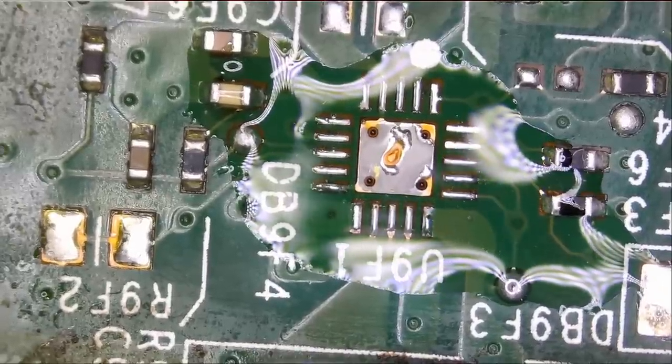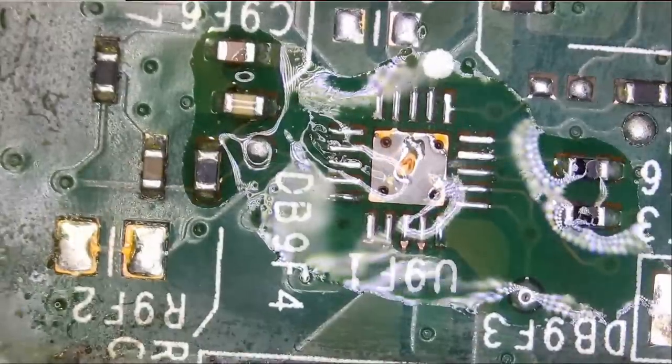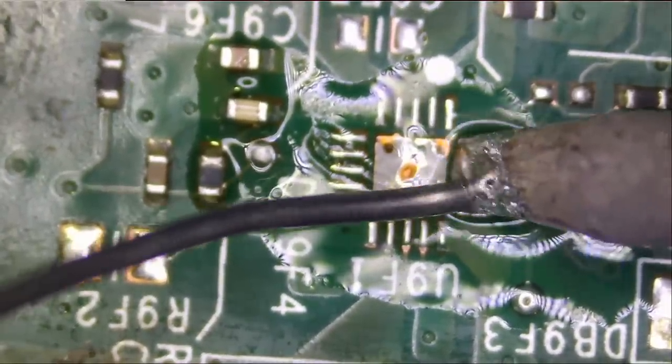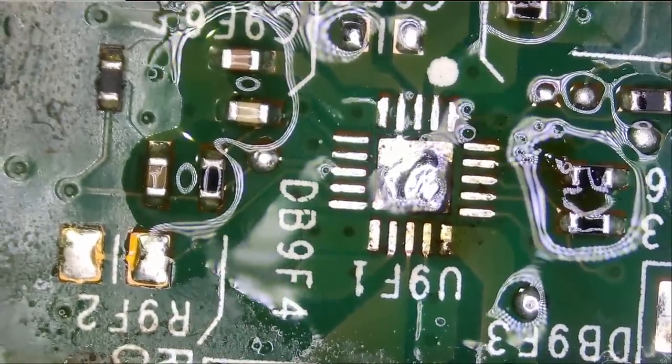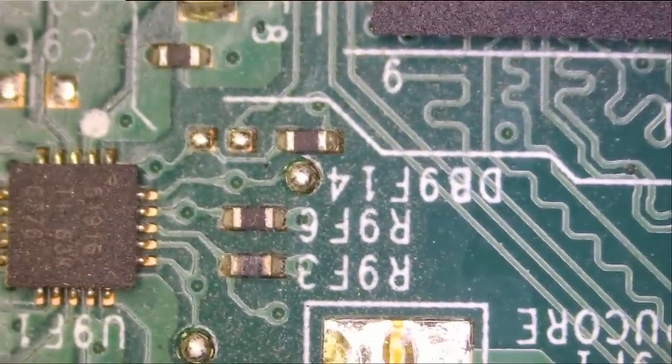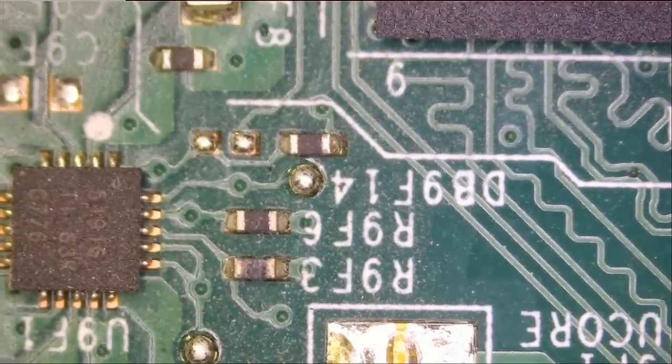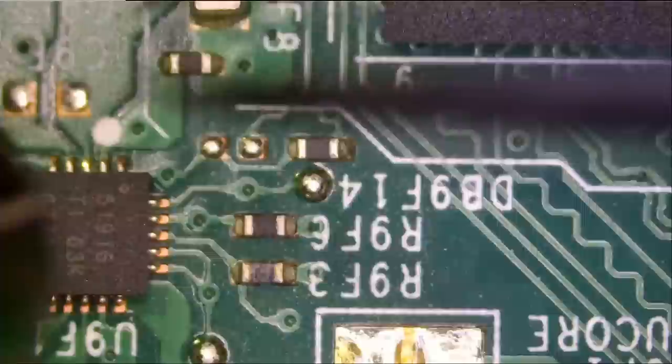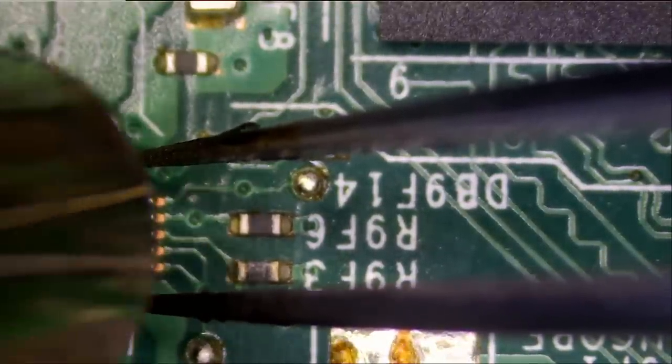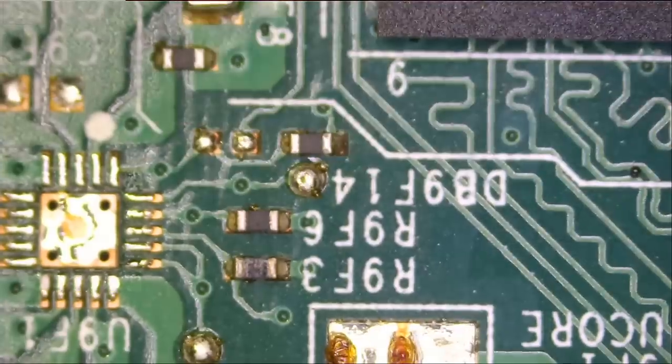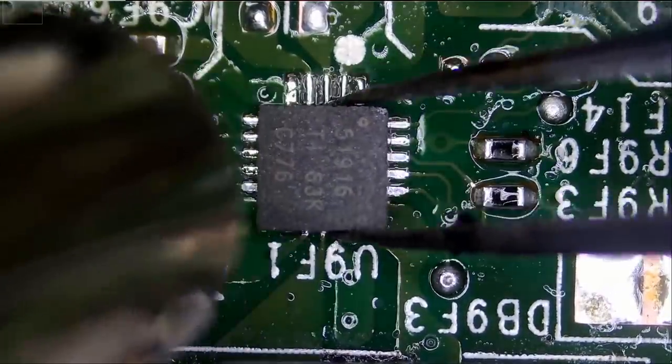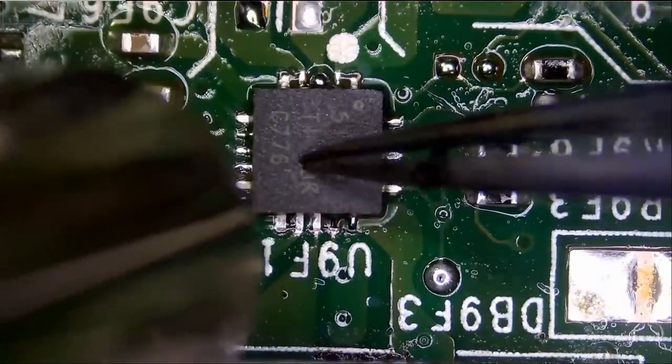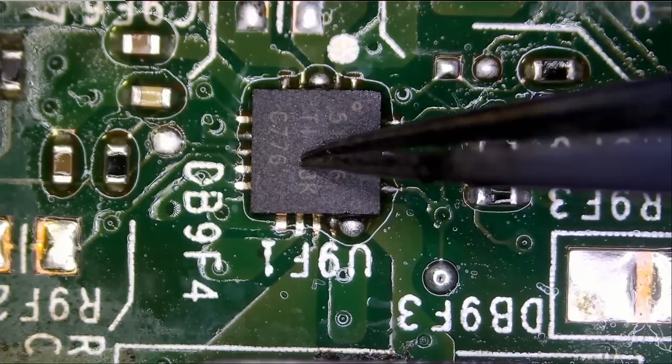So we're going to start by replacing this chip. Whatever this chip does, I do not care what it does. It had corrosion on it so I'm changing it. We're going to remove the chip from here and we're going to solder it on the customer's board. And this one is done.